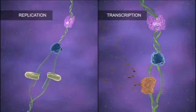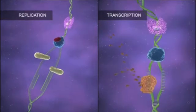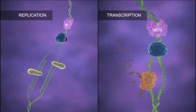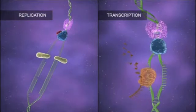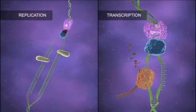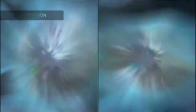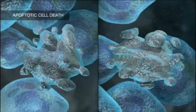In summary, the formation of a ternary complex DNA-yondelis-XPG will affect the two active cellular processes related to DNA, replication and transcription, finally inducing an apoptotic cell death.